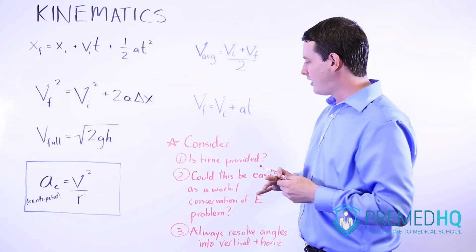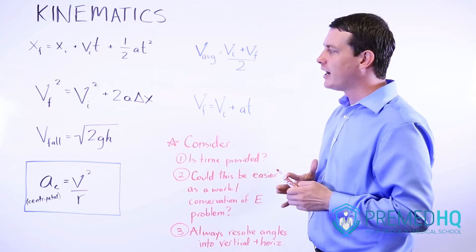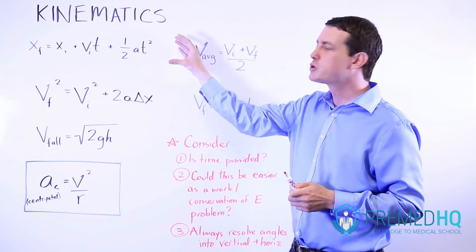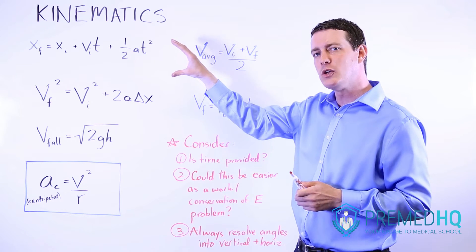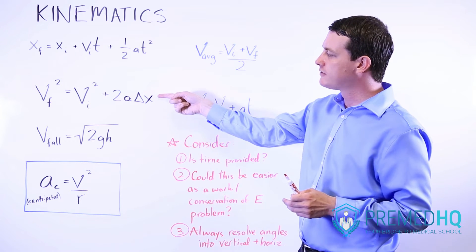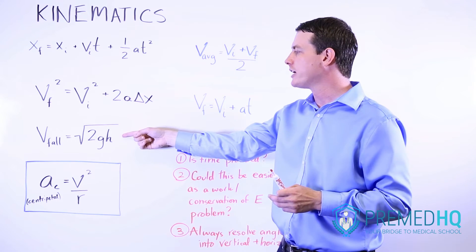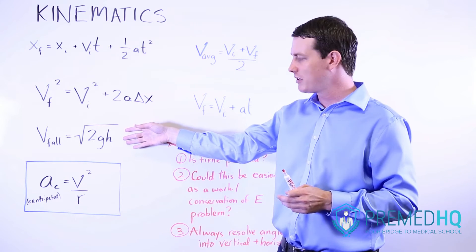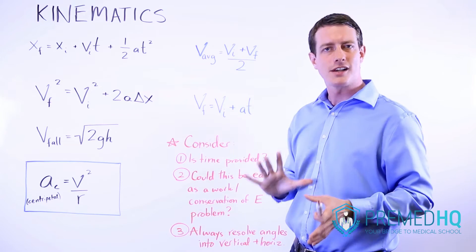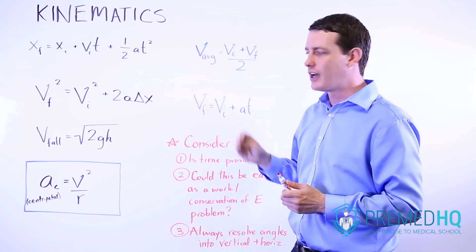Other things to consider are whether time is provided or not. This is often the highest yield, most effective kinematics formula you can use. But if you're not given time, then it's more likely you'll have to rely on this formula here, perhaps the falling object that starts from rest formula, or any of these other components that do not involve time as part of that formula.